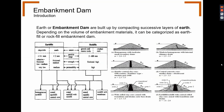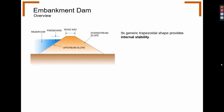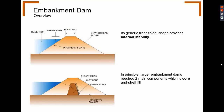Earth or embankment dams are built by compacting successive layers of earth. Depending on the volume of embankment materials, they can be categorized as earth fill or rock fill embankment dams. Its generic trapezoidal shape is designed to accommodate the water level of the reservoir with the required freeboard, providing internal stability. The upstream slope is where the reservoir is located, and the downstream slope is in the direction of seepage flow. Larger embankment dams require two main components: the core and the shell fill.